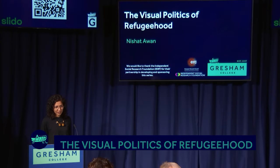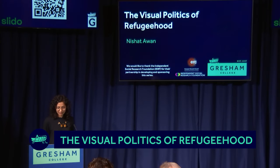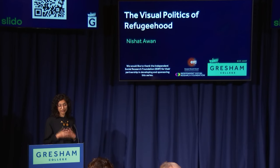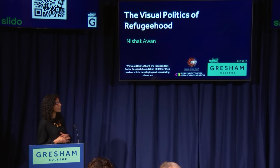I'm going to start with really unpacking the title of the talk and the accompanying image, which I guess all of you will have seen since you are here. Both of these I think do some work together to illustrate the arguments that I want to make in this lecture. So first of all the title: The Visual Politics of Refugeehood. A simple question to ask here is who is the figure of the refugee, because the answer is not a simple definition.